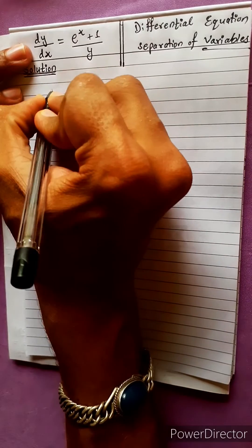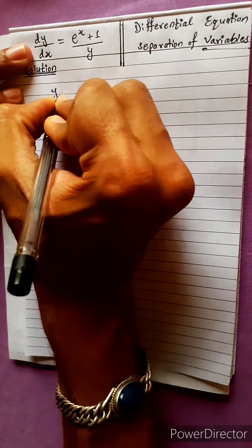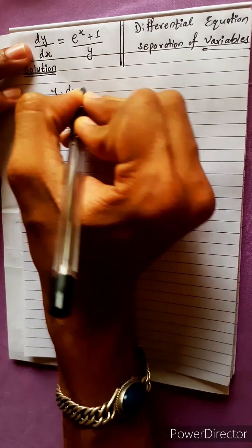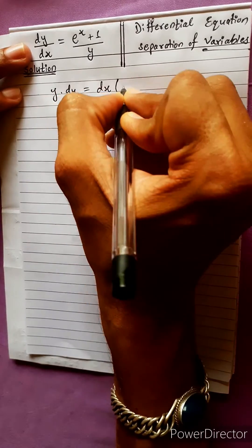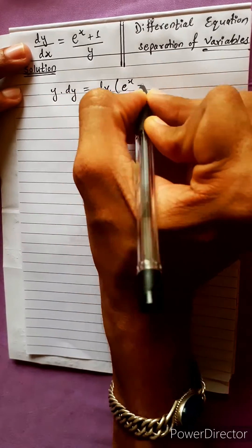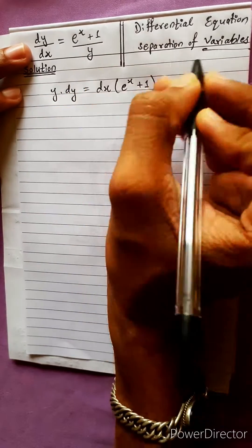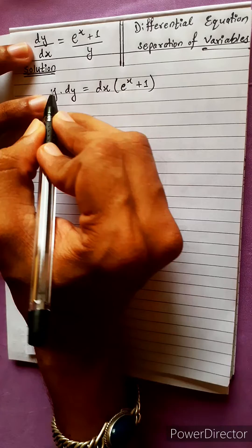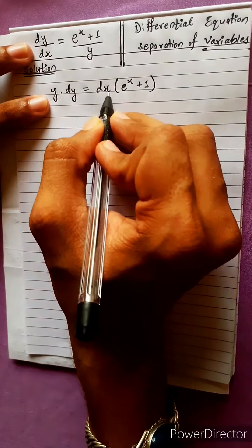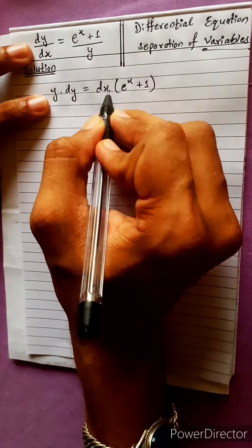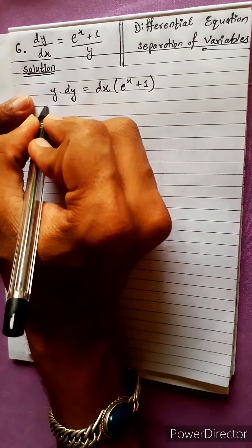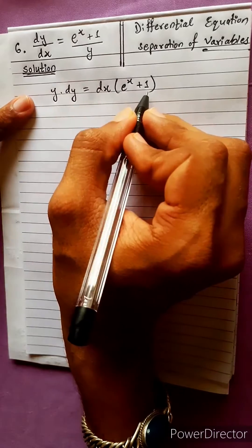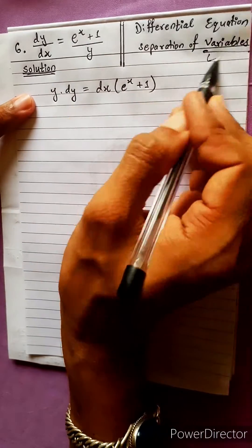First, cross multiply: y dy equals e to the power x plus 1 dx. This is the Separation of Variables — the y terms go to one side with dy, and the x terms including e to the power x go to the other side with dx. The variables are now separate.